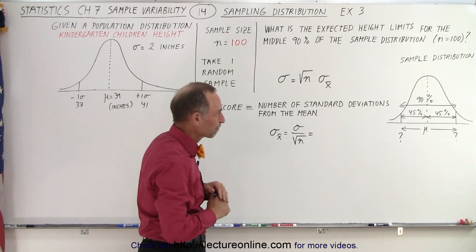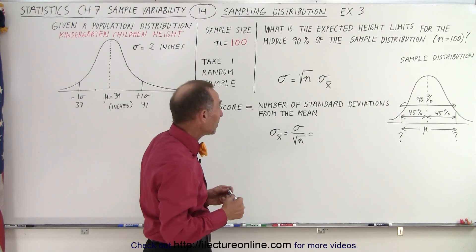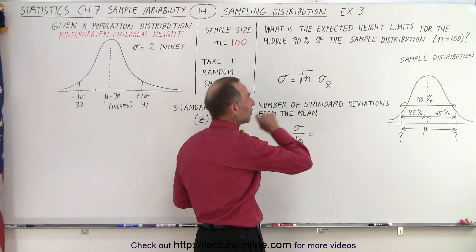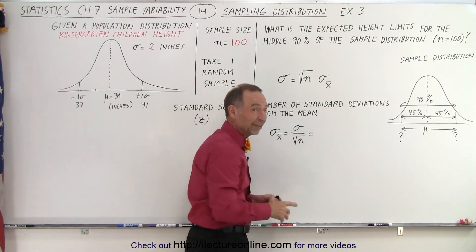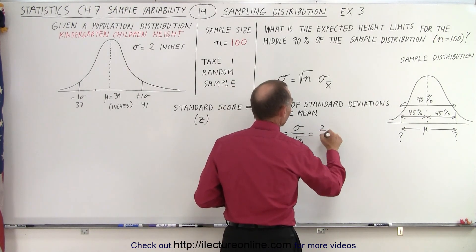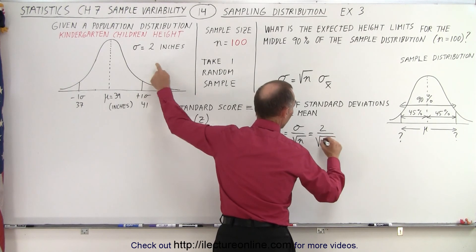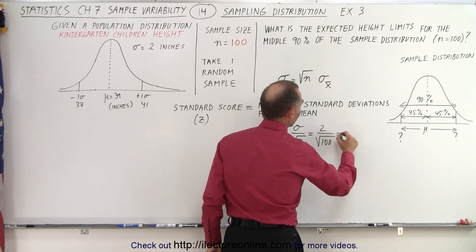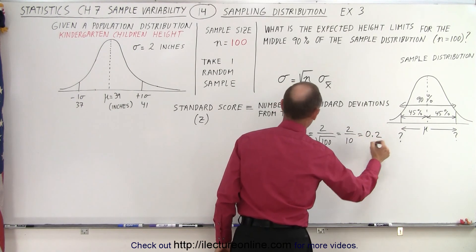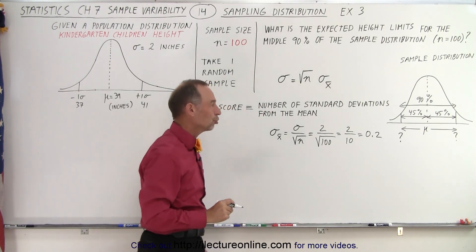All right, how do we do that? Well again we need to find the z-score and that means we need to find the standard deviation of the sample distribution now that we're given a sample size of 100. So that will be equal to the standard deviation of the population divided by the square root of the sample size. So in this case will be 2 divided by 10 or 0.2. So that's the standard deviation for the sample distribution.